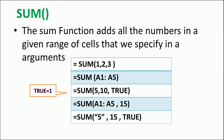Now look at this example: =SUM(5,10,TRUE). TRUE is a logical value that always has the value 1. So TRUE is converted to 1, and the SUM function performs 5+10+1, giving 16. Similarly, =SUM(A1:A5) adds A1 through A5, and then 15 is added to that result.